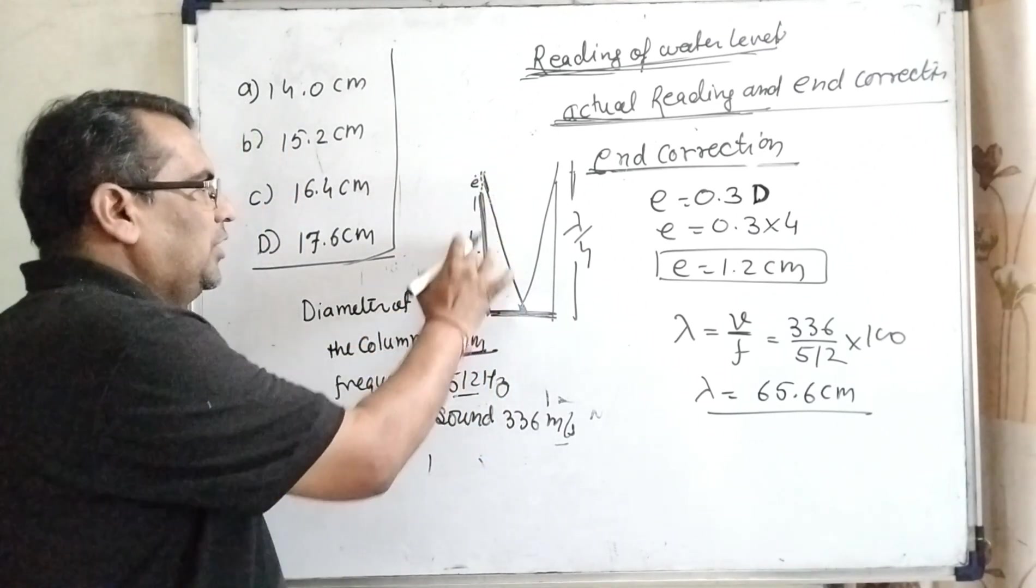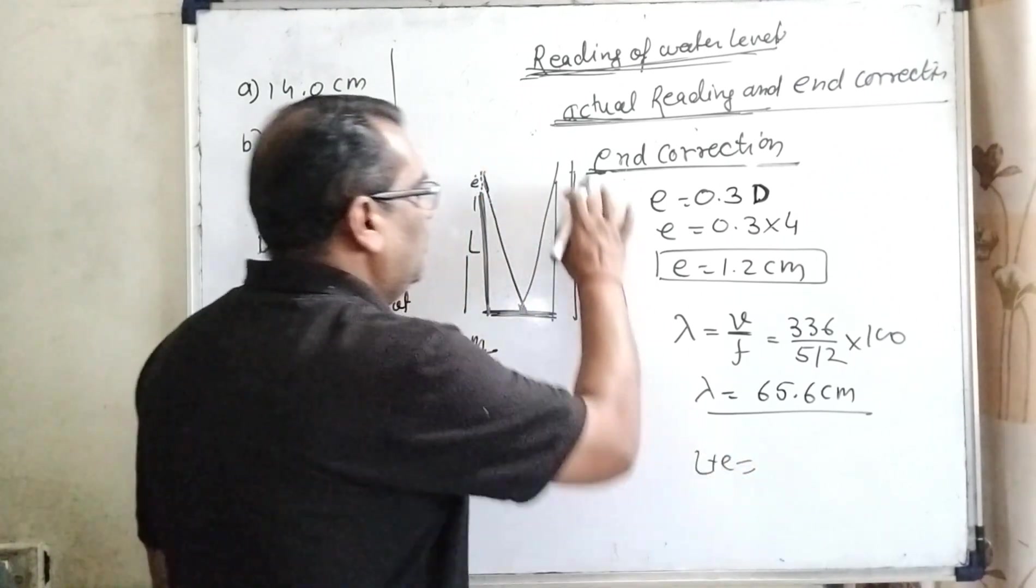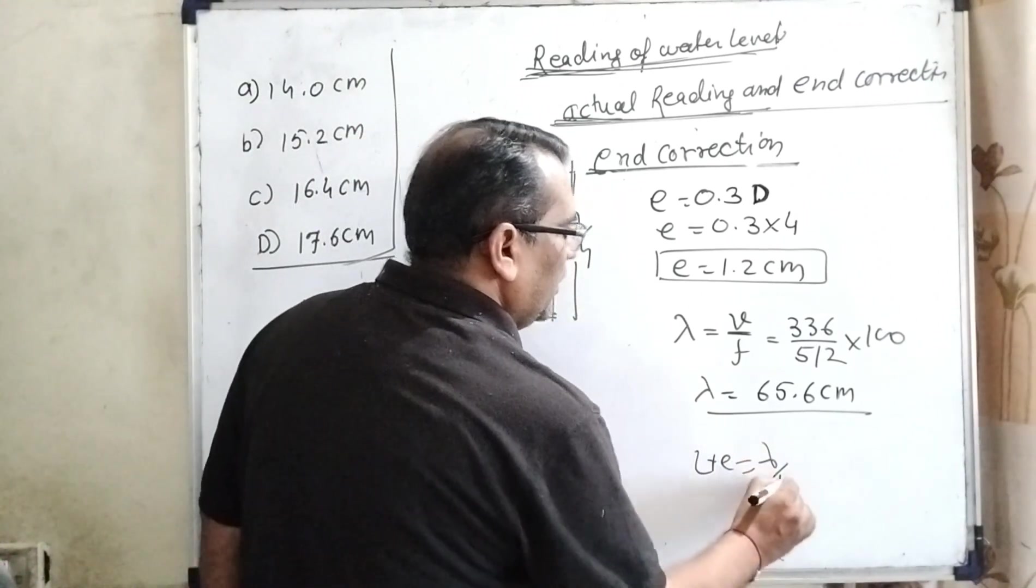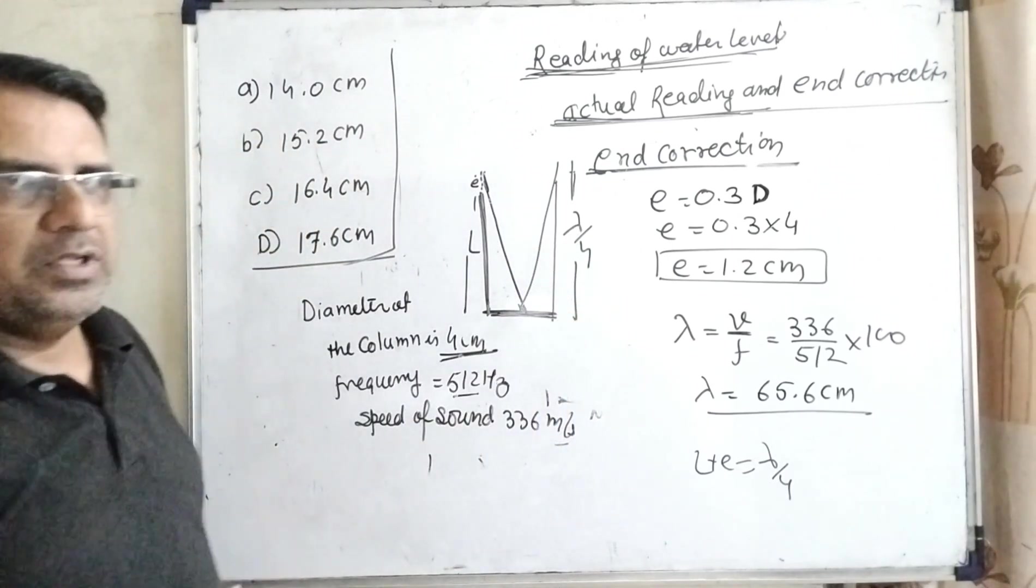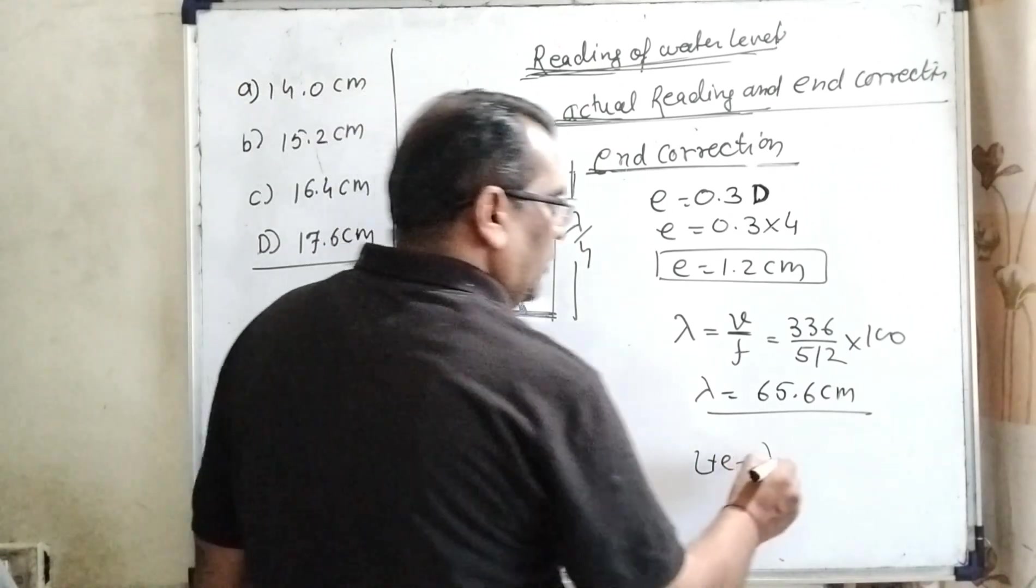So therefore, actual reading plus end correction, L plus E, equals lambda by 4. Because first resonance, first harmonic, is equal to lambda by 4.